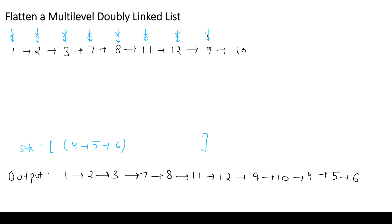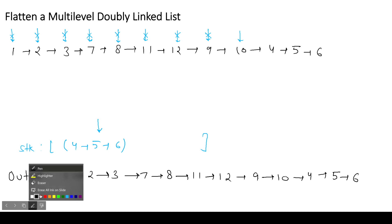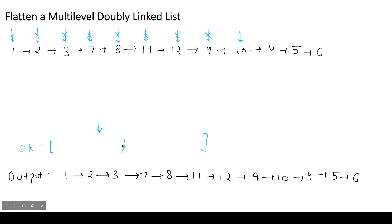We continue: nine has no child, ten has no child, and ten's next is null. We check the stack — it still has four, five, and six — so we pop that and attach it after ten. The stack is now empty. We move through four, five, six with no children, the next is null, the stack is empty, and traversal is complete. The result is the flattened output list.